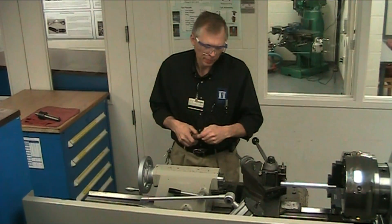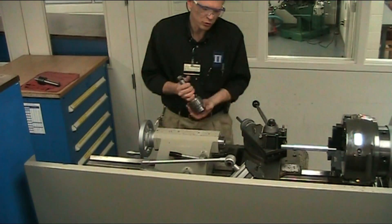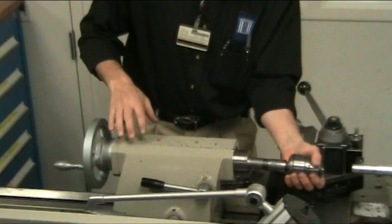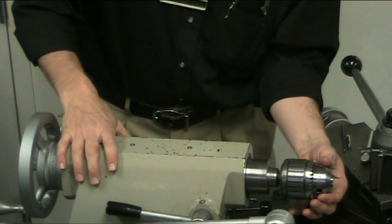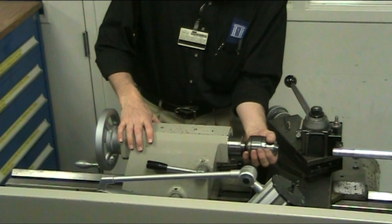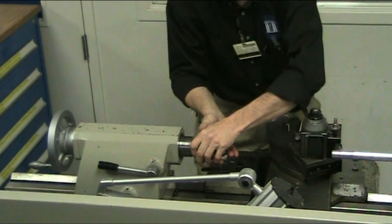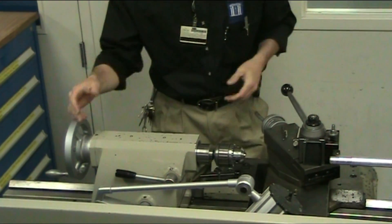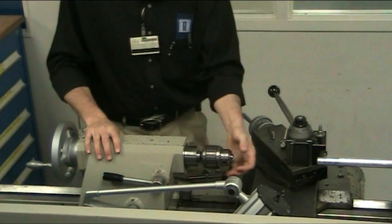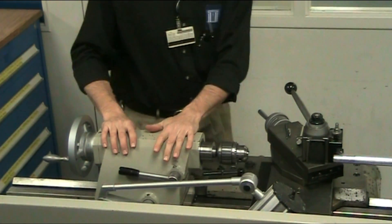All drill chucks have a tang and a Morse taper. It matches the Morse taper into the spindle of the tail stock. You just want to slide in your Jacobs chuck and slam it in place. I always pull on it to make sure it's set in place. That's pretty much how you assemble the drill chuck into the tail stock.